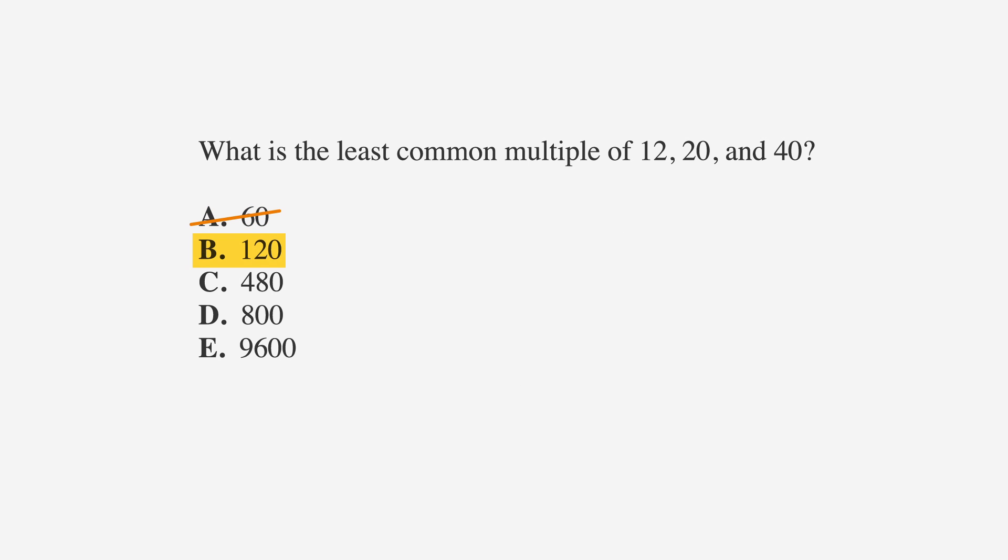Okay, moving on. Let's try B next, since that's the next smallest number in our remaining answer choices. 120 divided by 12 is 10, and 120 divided by 20 is 6. If we divide it by 40, we get 3. Since we're looking for the smallest number, we've got our answer. B is correct.